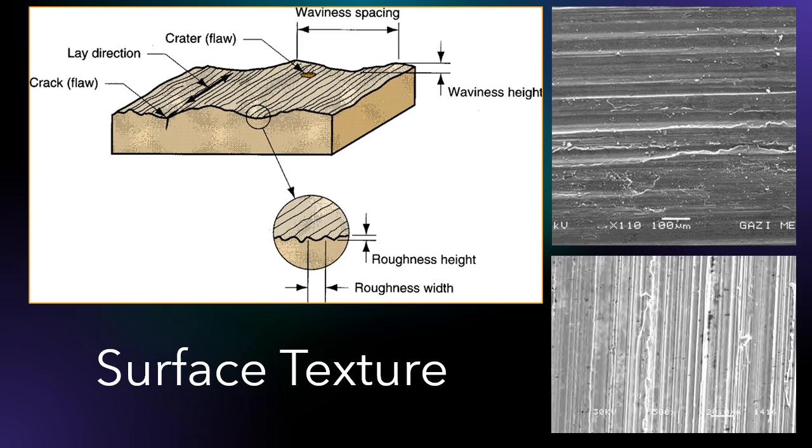Roughness is a small, fine-scale deviation from the nominal surface. Waviness is a deviation of much larger spacing.